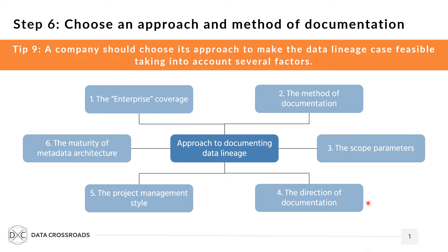The fourth factor is the direction of documentation. This factor plays a role when a company decides to document data lineage at various layers simultaneously. Three approaches exist. The first is top-down, where a company starts from the business level — for example, by documenting business processes, application flows, and data set flows. The bottom-up approach assumes that physical data lineage will be documented first. The hybrid approach assumes that the company performs data lineage documentation at various levels simultaneously.